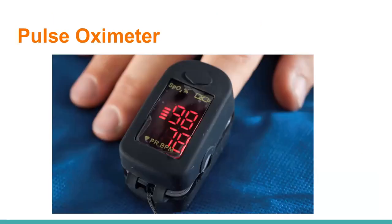The pulse oximeter measures the oxygen attached to hemoglobin in the blood. Place it on the finger for adults; for kids, the toe or ear may work better. Put it on early, especially for patients with respiratory issues, so you know quickly if they are hypoxic. Anything less than 94% — find out what's going on.